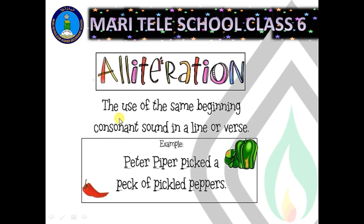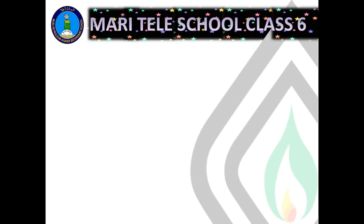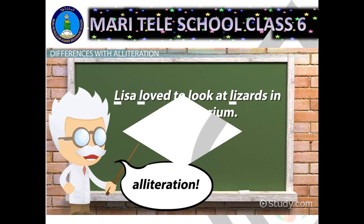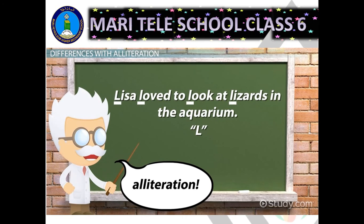Alliteration means the use of the same beginning consonant sound in a line or verse. For example, 'Peter Piper picked a peck of pickled peppers' — here the 'P' sound is repeated. Similarly, 'Lisa loved to look at lizards in the aquarium' — here the 'L' sound is being illustrated.